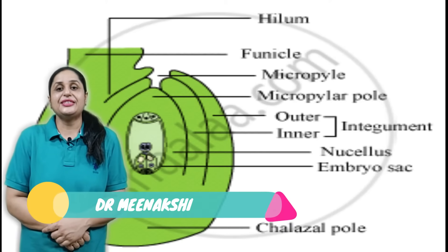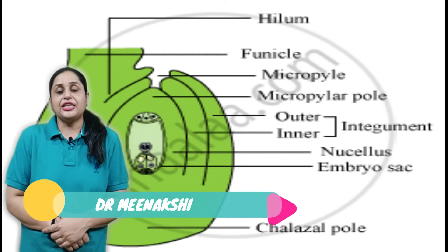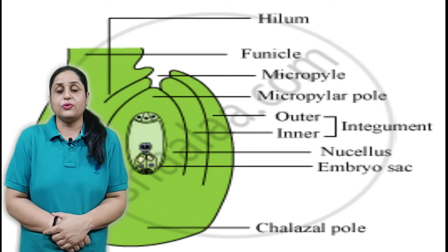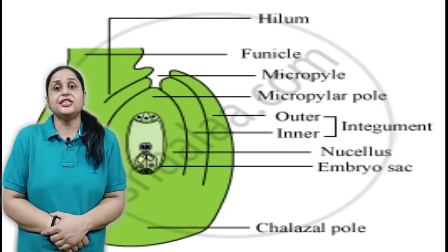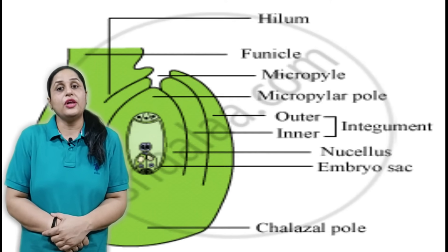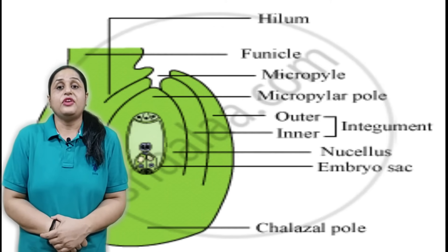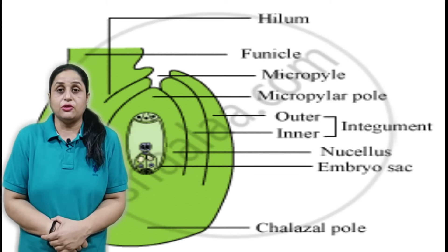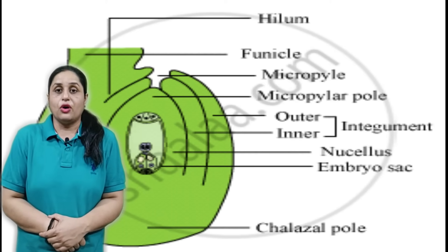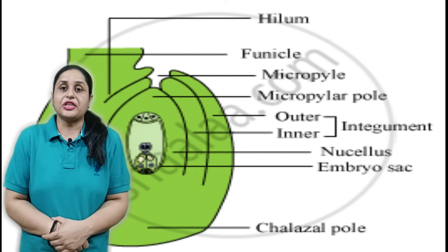Hello my dear students, this is Dr. Meenakshi again for you, and today I am going to talk about the structure of Megasporangium. We know that Megasporangium is an ovule and it is present in its primary gametophyte, that is the embryo sac. So what is the basic structure of the embryo sac — we will talk about that in this video.